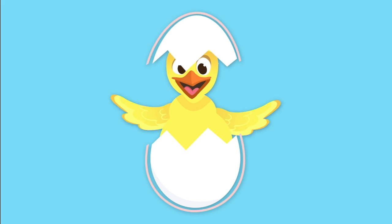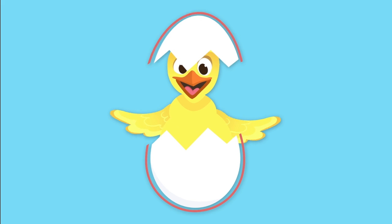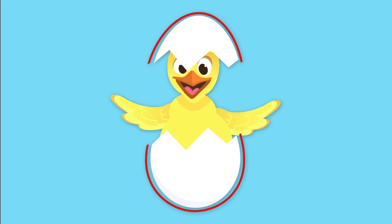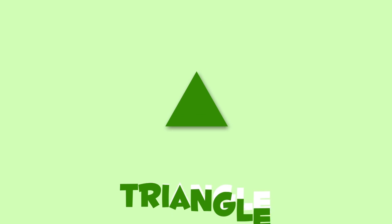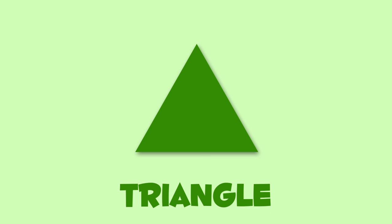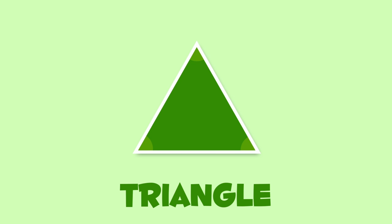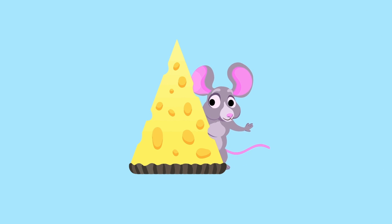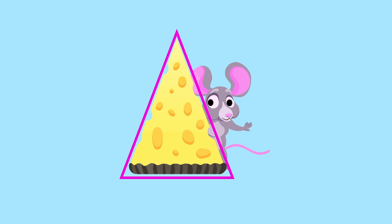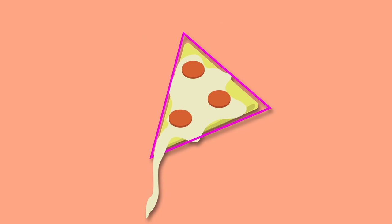This is a triangle — it's a polygon with three sides and three angles. The triangle is like this piece of cheese or like this slice of pizza. Yum yum, it looks delicious!